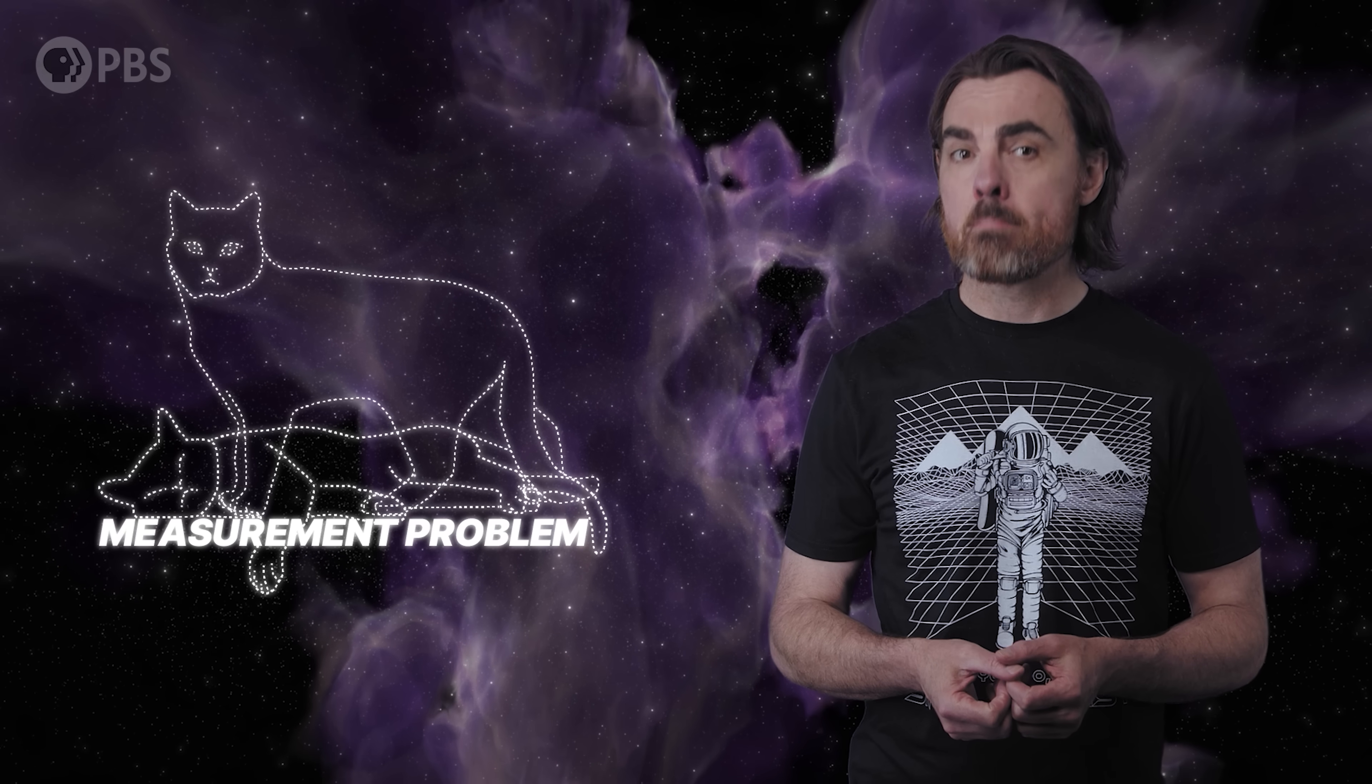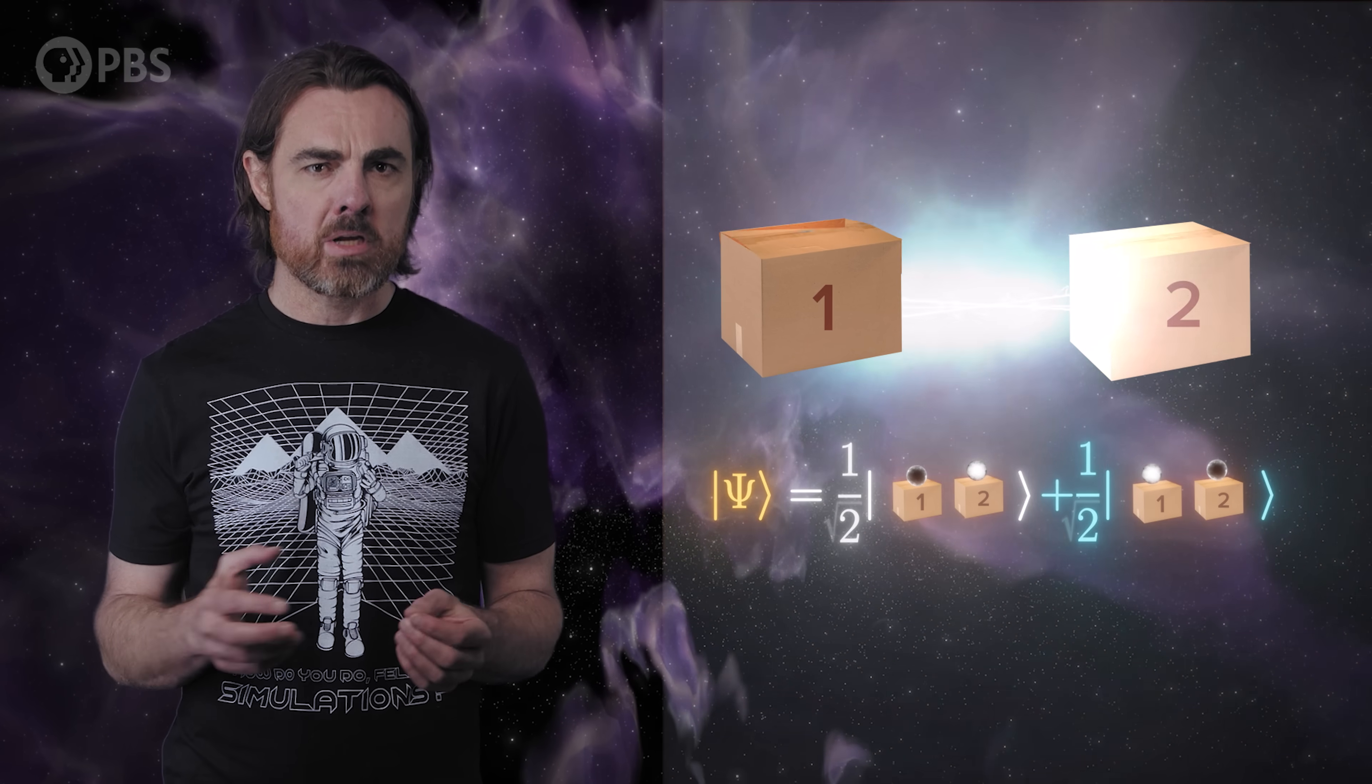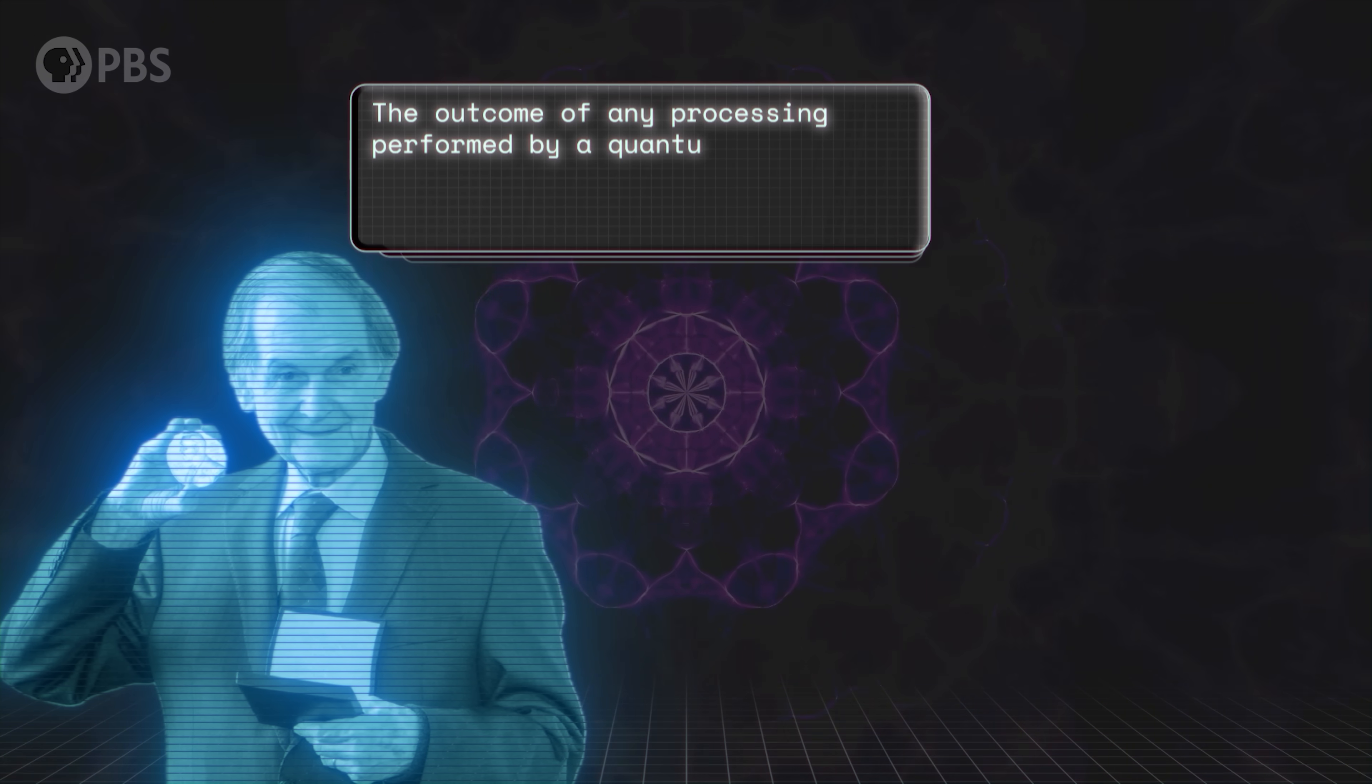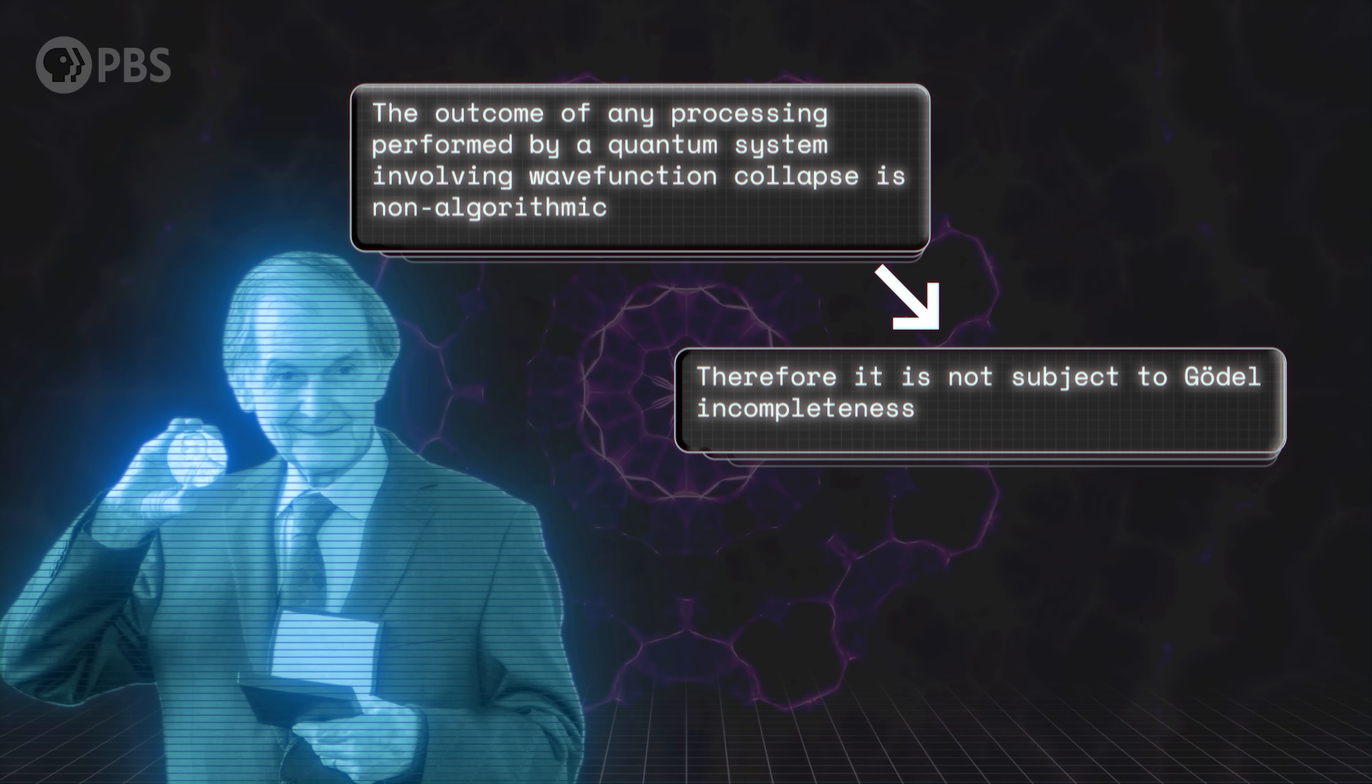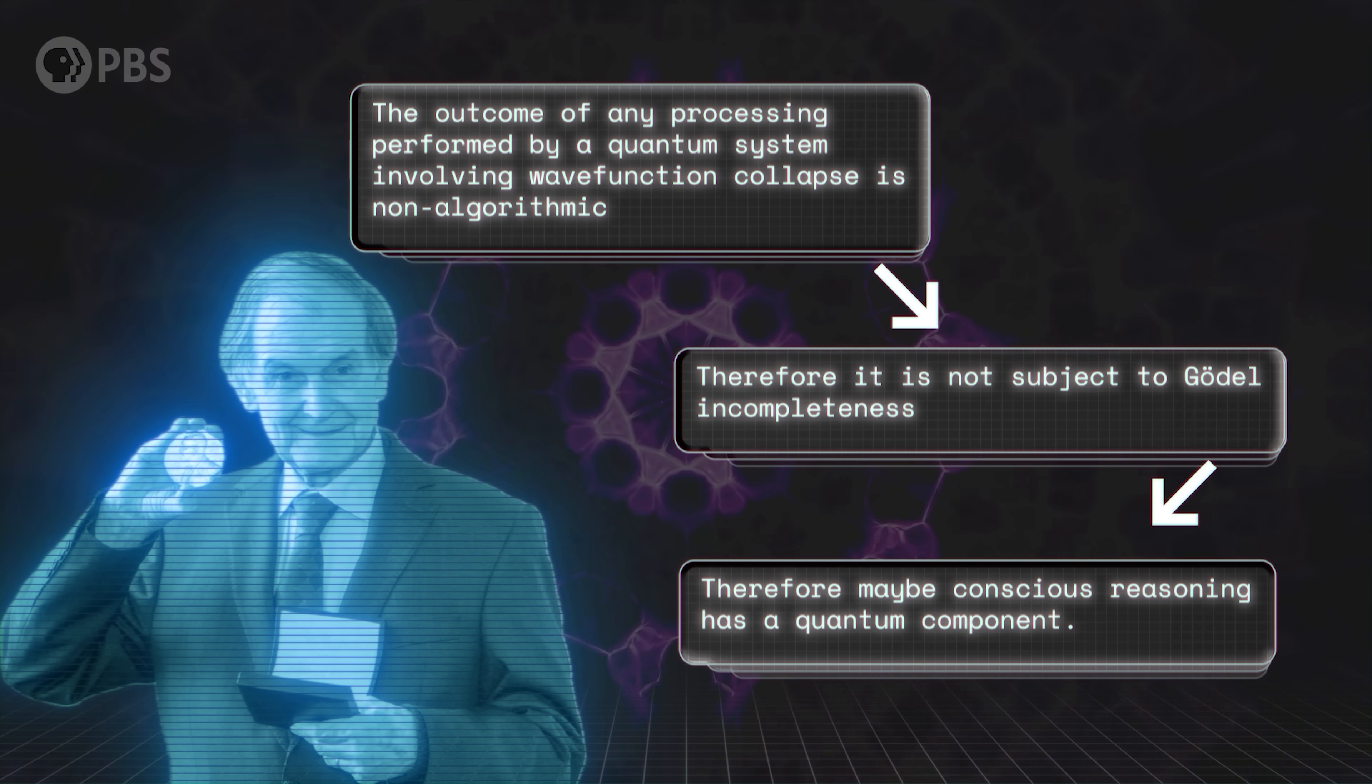We call this mystery the measurement problem. One thing we know about wave function collapse is that it appears to include a truly random factor. The results of measurements are chosen by the roll of the dice, albeit dice weighted by the shape of the wave function. So if an event is truly random, then almost by definition there is no algorithm that can perfectly determine its outcome. Therefore, Penrose argues, the outcome of any computation or information processing performed by a quantum system involving wave function collapse is non-algorithmic, in the sense that the outcome cannot be predicted within the framework of any Gödel-esque mathematical system, and therefore is not necessarily subject to Gödel incompleteness. Therefore, maybe conscious reasoning has a quantum component.